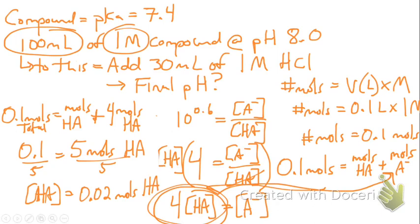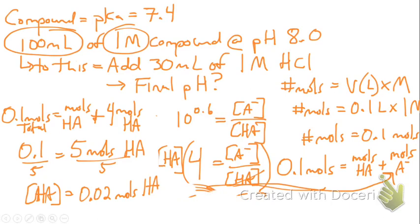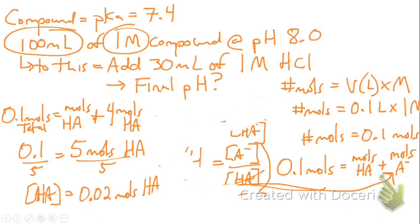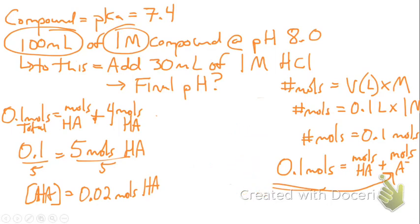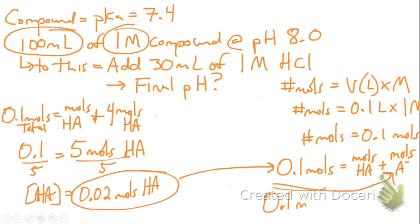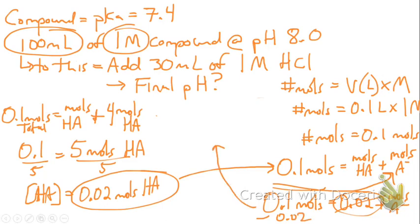Since we know we have 0.02 moles of HA, we can plug back into the total moles equation: 0.1 = 0.02 + moles of A⁻. Subtracting gives us 0.08 moles of A⁻.